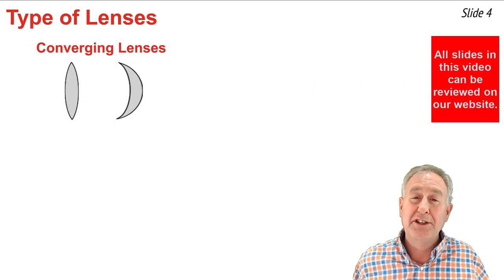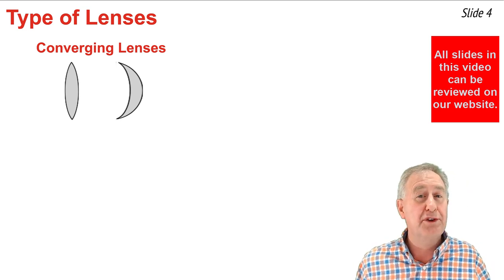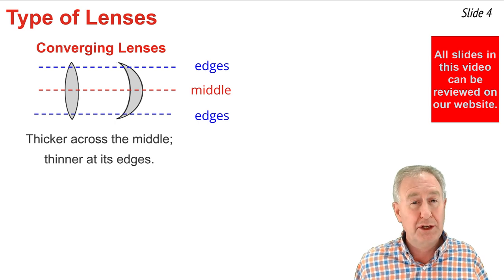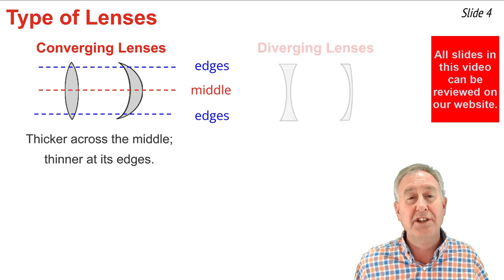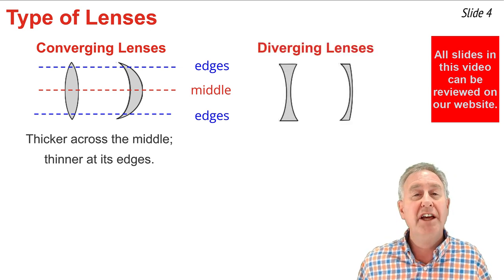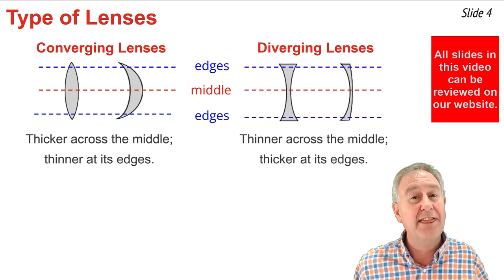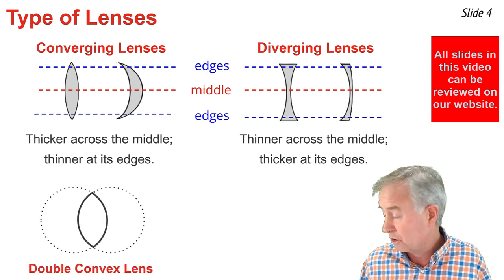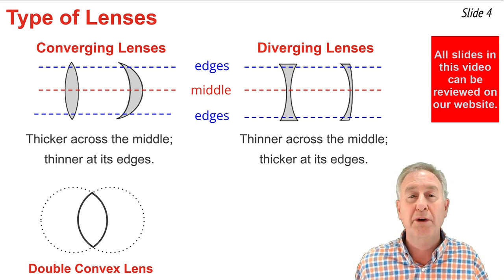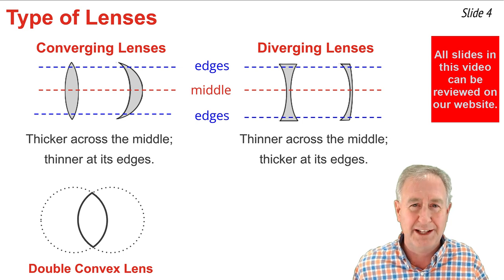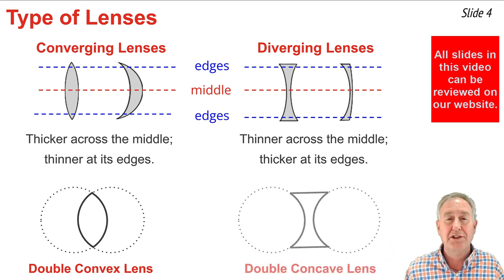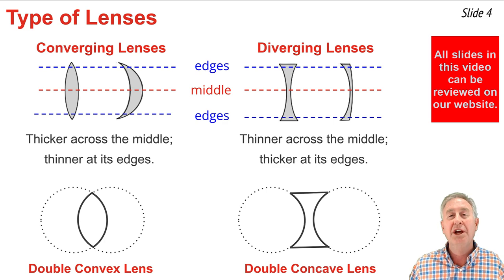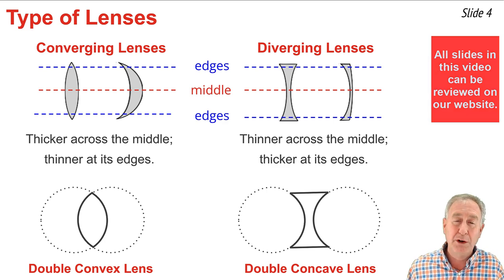Lenses can be categorized as being either converging lenses or diverging lenses. Converging lenses share the unique trait of being thickest in their middle and thinnest at their edges, whereas diverging lenses have the opposite trait of being thinnest in the middle and thickest at the edges. In this tutorial series on lenses, we will be discussing double convex lenses, which are perfectly symmetrical and converging, as well as double concave lenses, which are also symmetrical but are diverging.